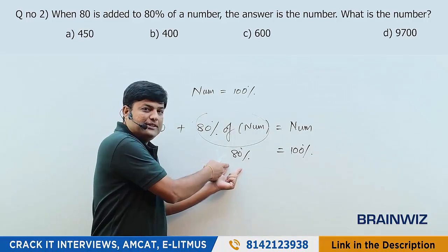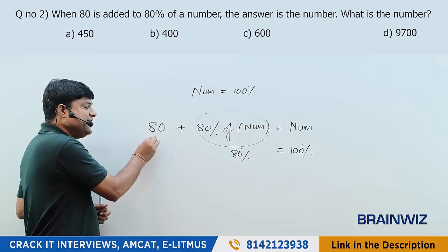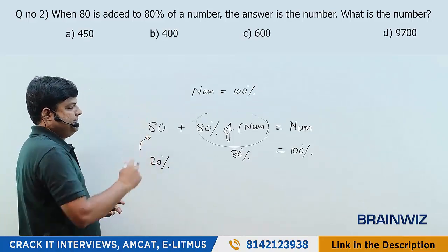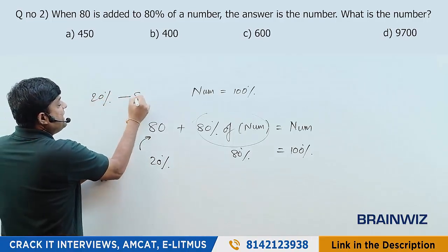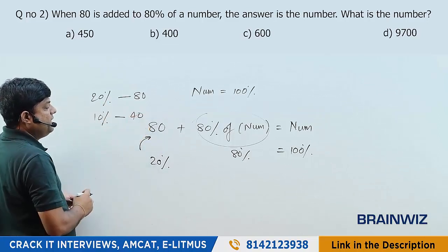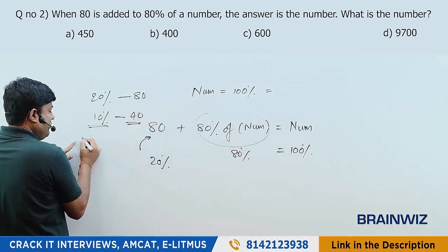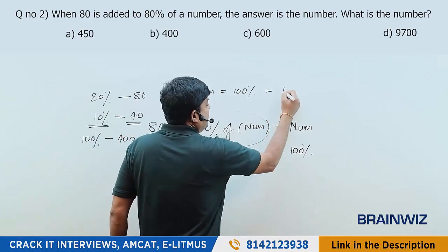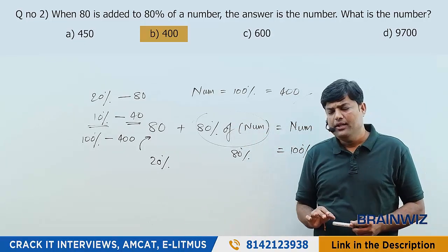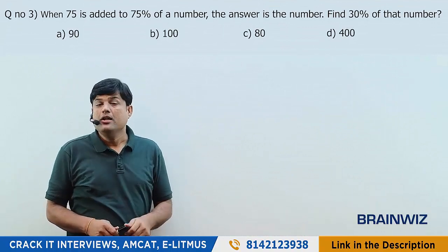20% is missing — adding 20% to 80% gives 100%. So when you add 80, it is satisfied, meaning 80 is acting like 20% of the number. So 20% equals 80. Then 10% is half of that, which is 40. When 10% is 40, just add one extra zero to get 100% — so the number is 400. No x, no formulas needed.